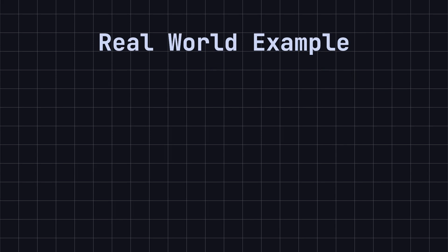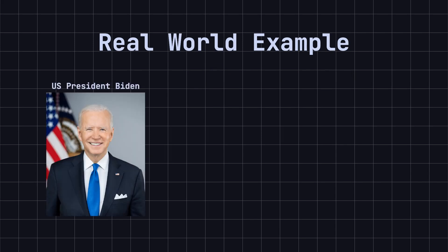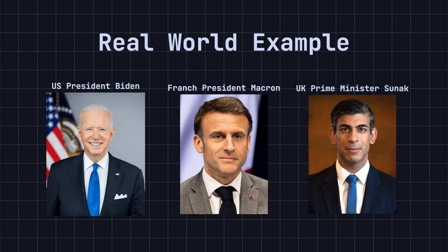Imagine that a country can only have one president at a time. Whenever a decision needs to be made by the president, only this single president can be found. The president in this example represents a Singleton. This example vividly illustrates the concept of the Singleton pattern.